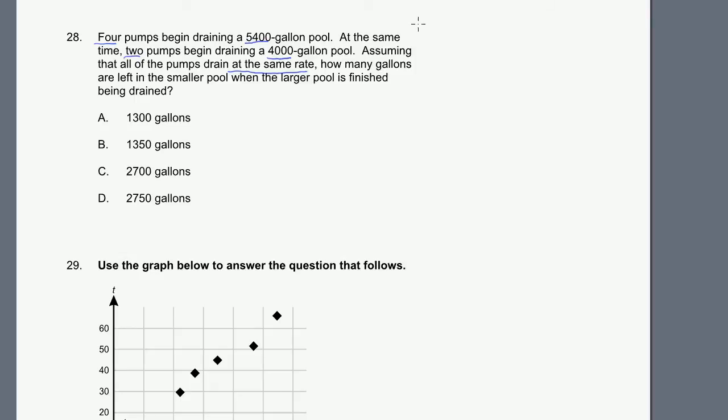Let's assume that each pump drains at x gallons per minute. So four pumps will drain at 4x gallons per minute. Two pumps will drain at 2x gallons a minute. How many minutes does it take to drain the 5,400 gallon pool? It'll be 5,400 gallons divided by 4x gallons per minute. What is this equal to?